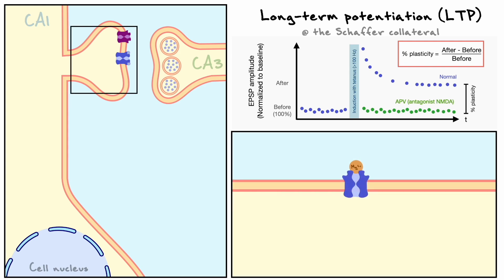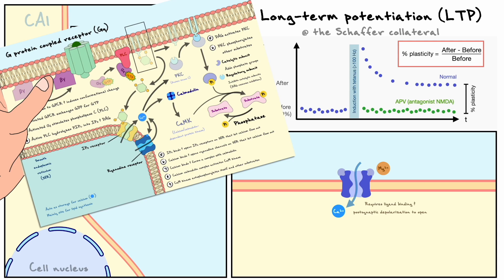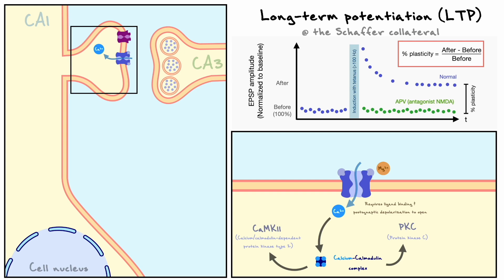Two key properties of NMDA receptors explain how they can mediate plasticity. First, their opening requires both glutamate binding and postsynaptic depolarization to remove a magnesium blocker. Second, they are able to conduct calcium inside the cell when they open. Calcium is a very important second messenger in neurons. Recalling the Gq pathway, some of calcium's downstream effects include binding to calmodulin and the activation of distinct kinases such as PKC and CaMK2. The activation of these two kinases leads to two important aspects of plasticity.